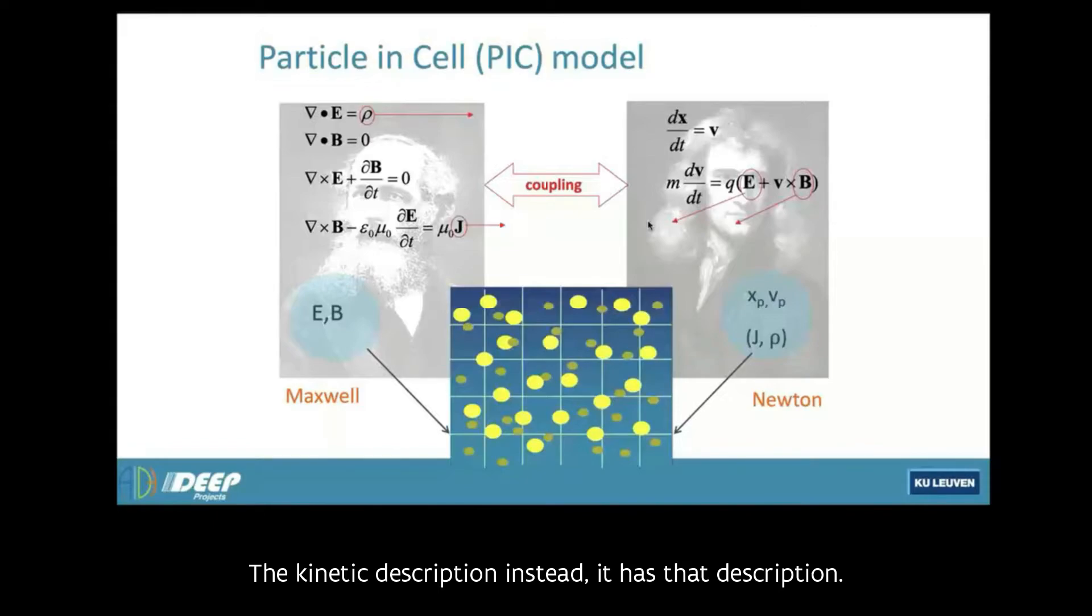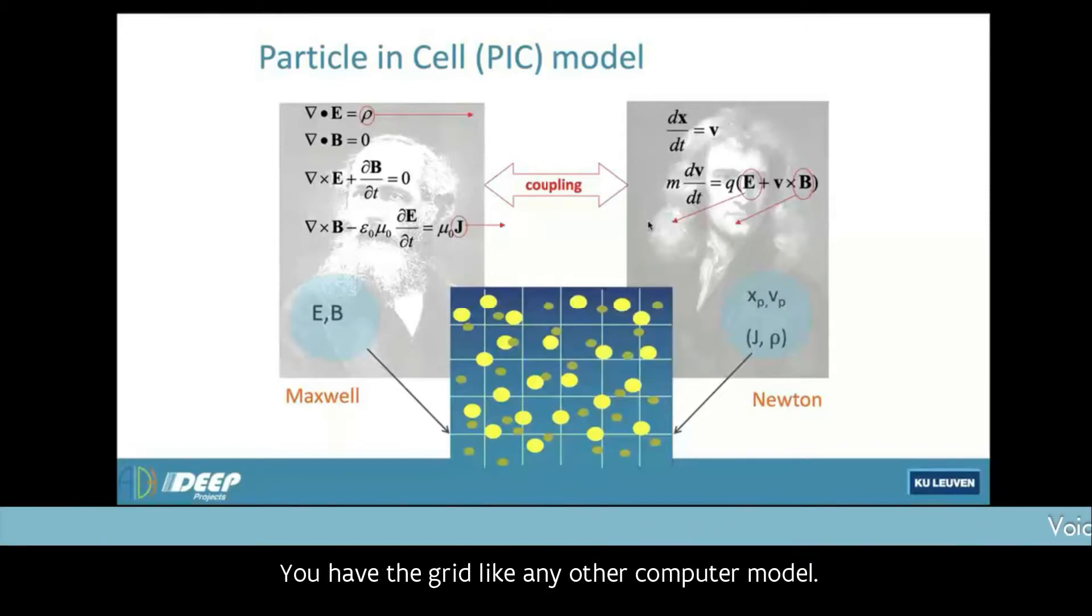The kinetic description, instead, has that description. So locally it wants to know, for example, in each cell what is the electricity, what is the magnetic field properties. But it also has, on top of that, a distribution of particles. So that's actually very interesting for a computer, because now you have two agents. You have the grid, like any other computer model, but you also have particles.